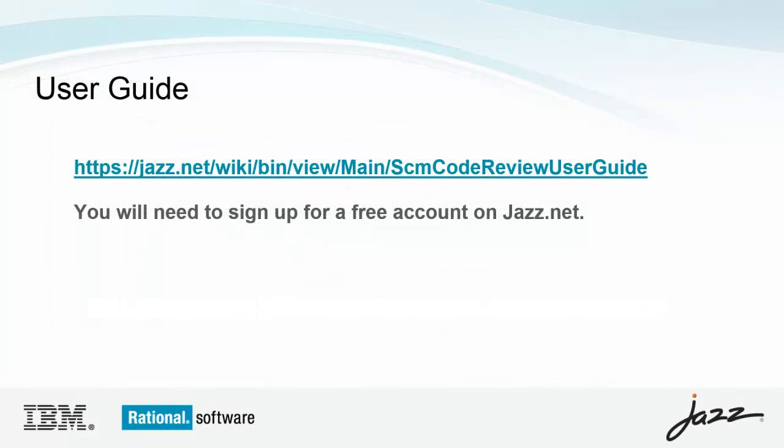The information described in this video series can be found in our user guide, which is available on our wiki at the URL listed here. To access the wiki, you will need an account on jazz.net, and it's free. Links to other videos in this series can be found in the user guide, or you can simply search for Rational Team Concert code review in your preferred search engine.